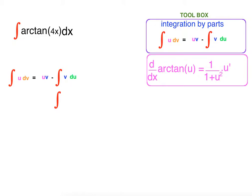First we have to define what u and dv is. Our u will be arctangent of 4x. Our dv will be 1, so you can consider arctangent of 4x times 1. So if dv is 1, what is v? What is the antiderivative of 1 with respect to x? It is x.